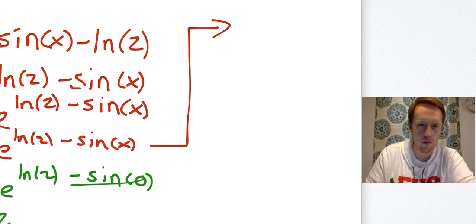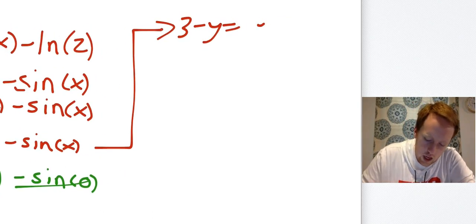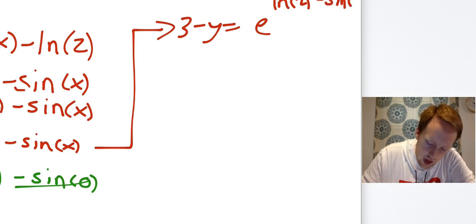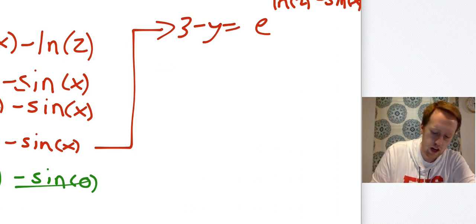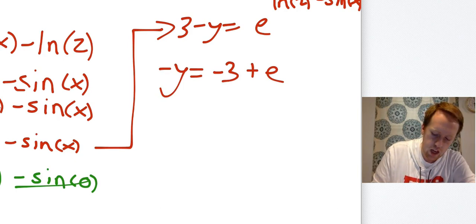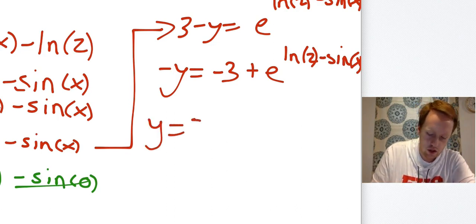I'm going to go up here and finish it. I know I'm getting all kinds all over the place. 3 - y = e^(ln(2) - sin(x)). Now I need to move the three over. So -y = -3 + e^(ln(2) - sin(x)).